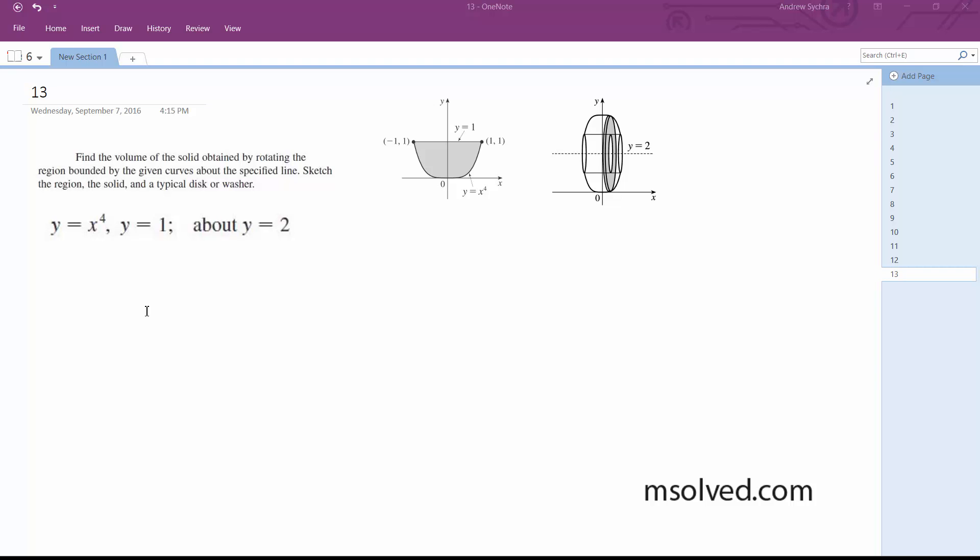Alright, so we want the area of this. So A of x is going to be equal to pi times (2 minus x to the 4th) squared minus pi (2 minus 1) squared, which is going to be equal to pi times (3 minus 4x to the 4th plus x to the 8th).